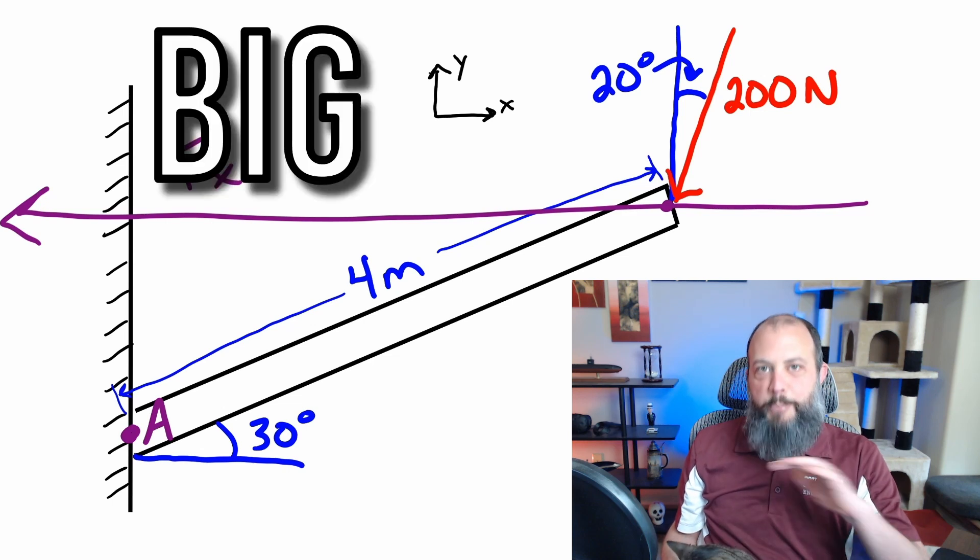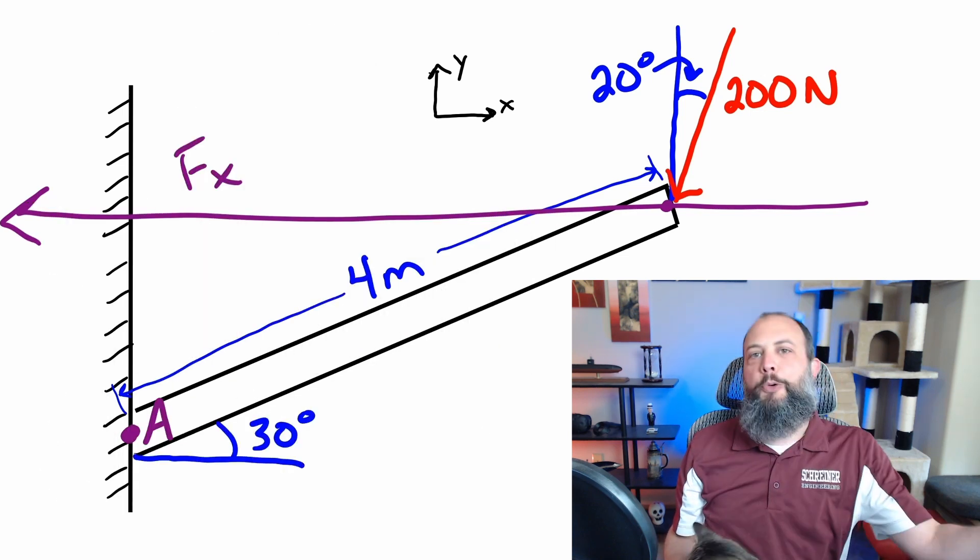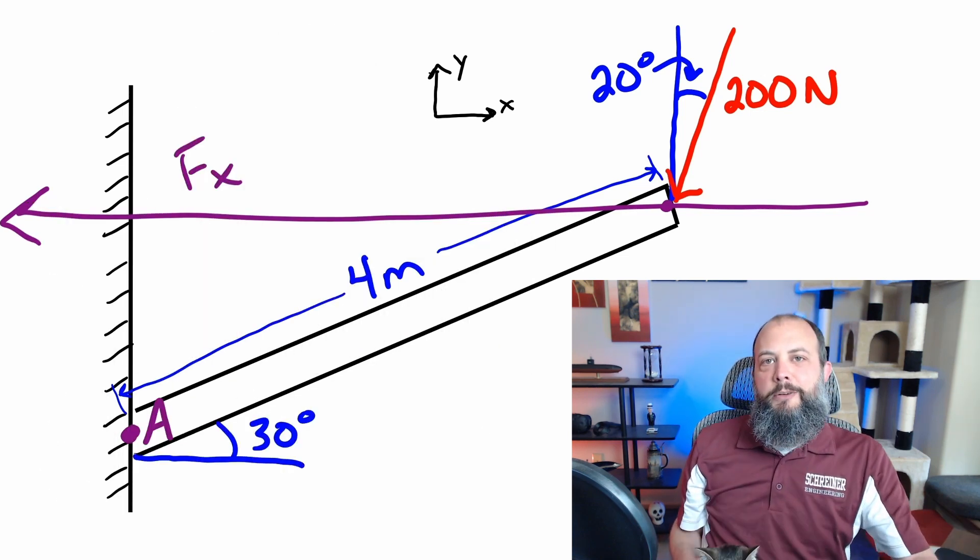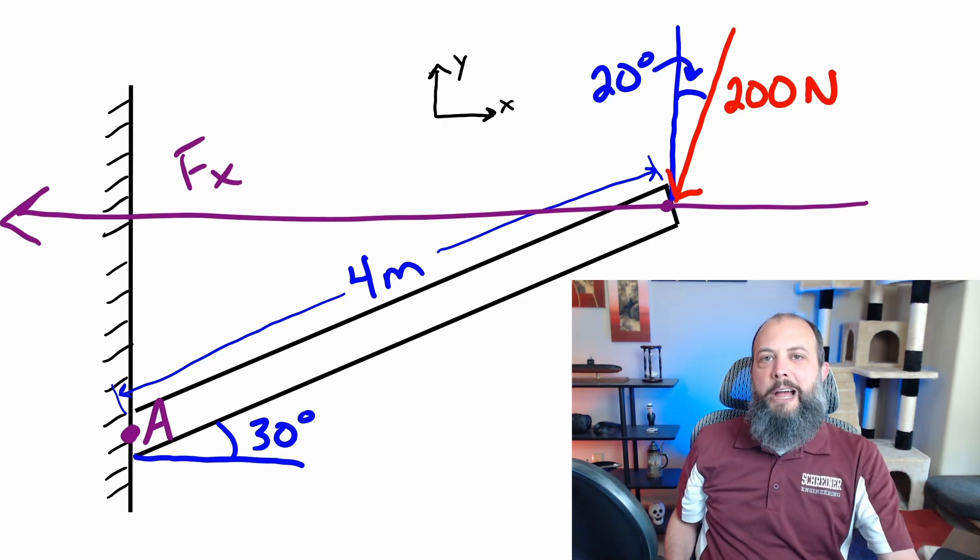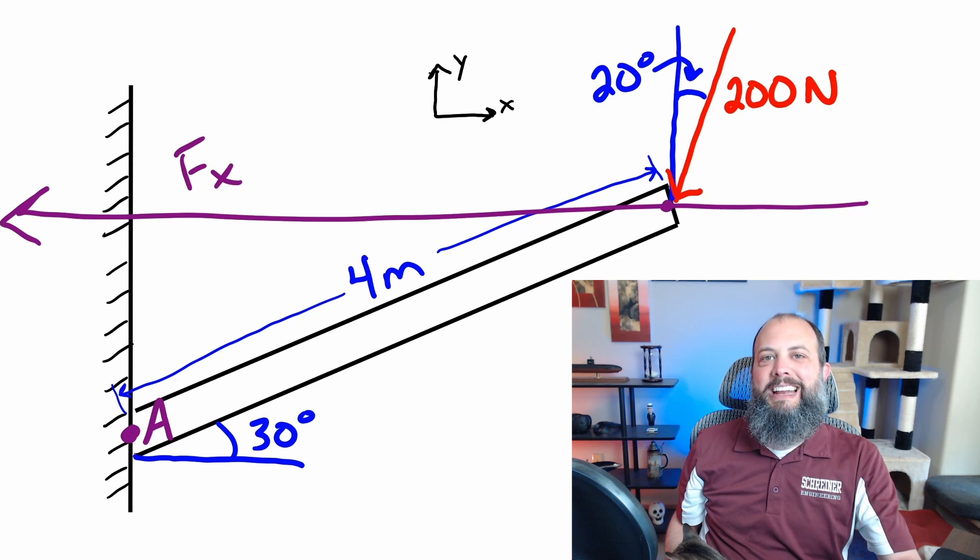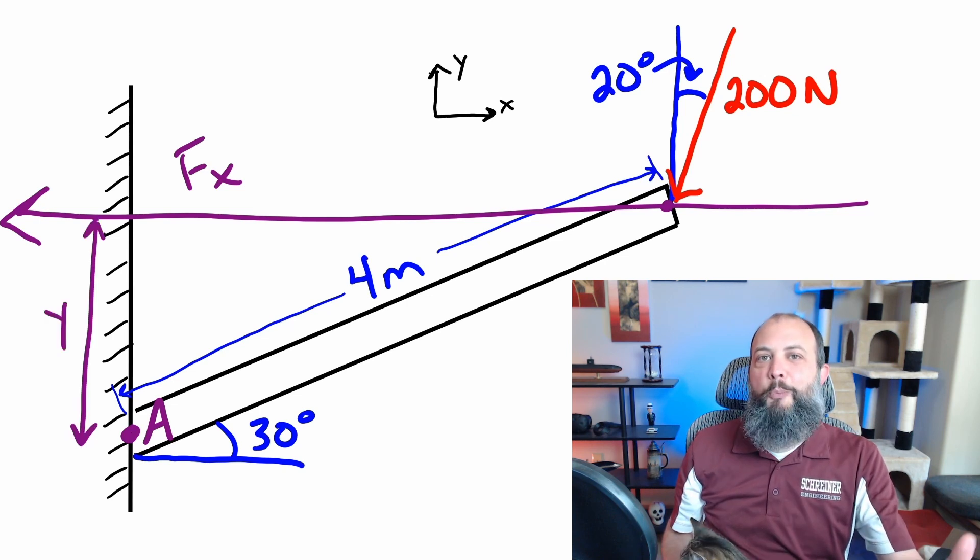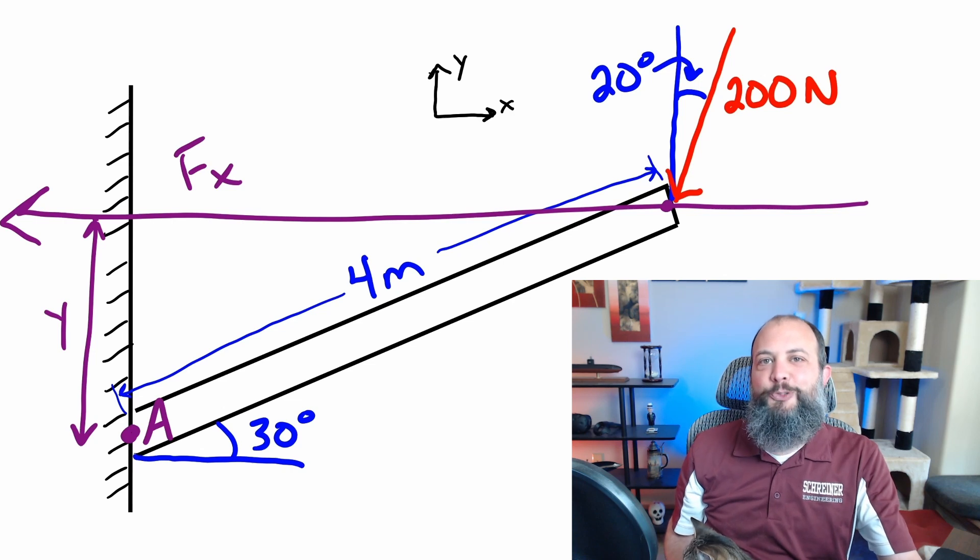Instead, draw yourself a big honking arrow that goes all the way across your entire page because the actual length of the arrow is completely arbitrary. And so now if I asked how far is that purple X component arrow from point A, it's now much more clear that it's that vertical distance Y. That's how far it is away.